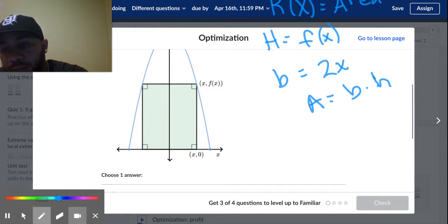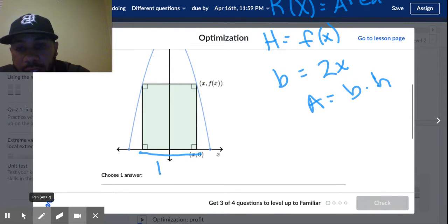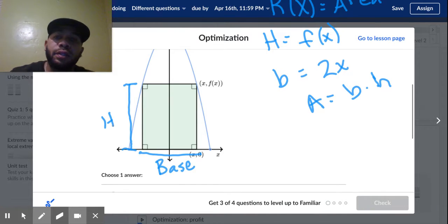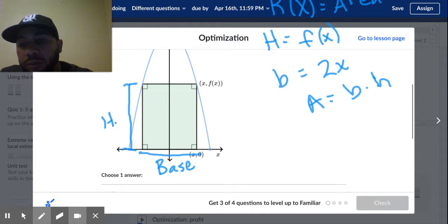And how I'm getting that is that this is the base, that is the base. And this up here is the height, that is the height. Nice and easy, nothing too insane. Just nice and easy. That's the height. Does that make sense? Base, height, area of the rectangle is base times height.